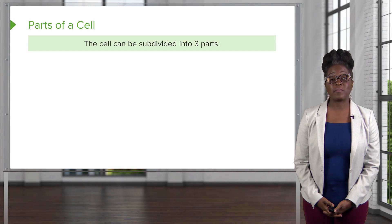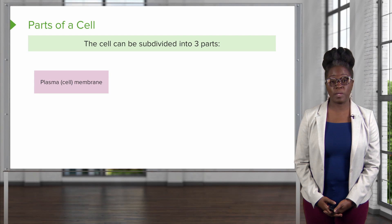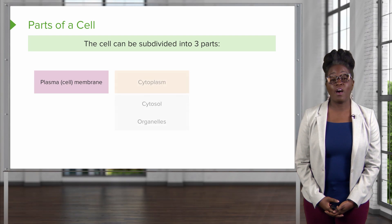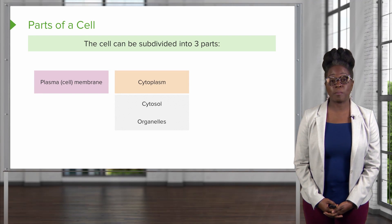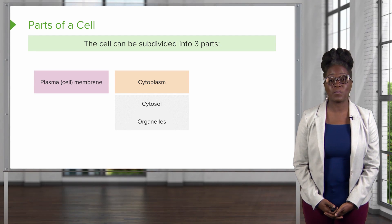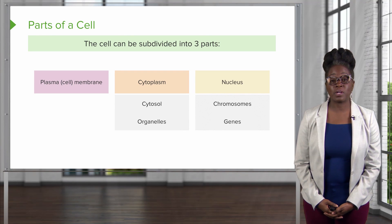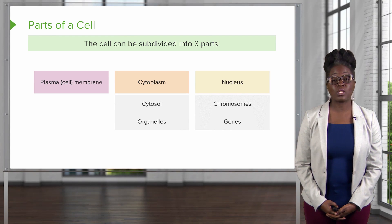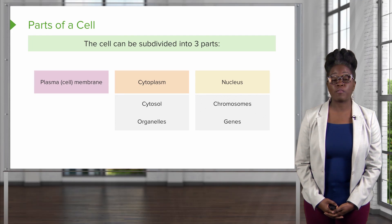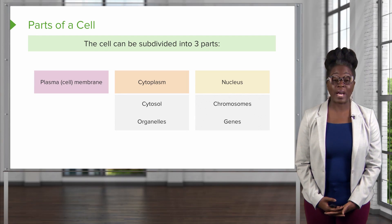We will work our way from the outside in, starting first with the plasma membrane, which is going to separate the internal and external environments of the cell. Then we will move into the cytoplasm, where we will discuss the cytosol as well as different organelles that perform different functions in the cell. Finally, we will conclude with the nucleus, including its chromosomes and genes, which allow the cell to allow our body to function.